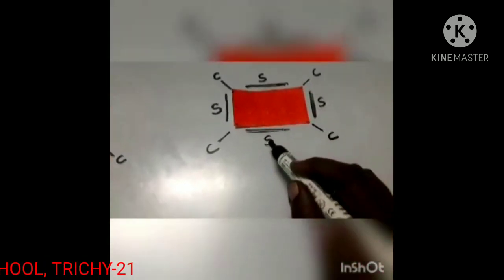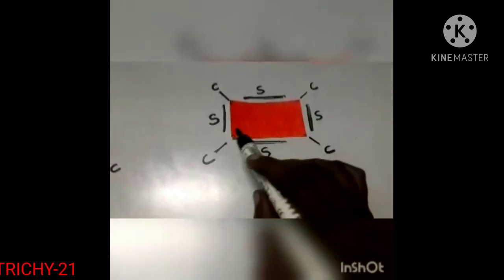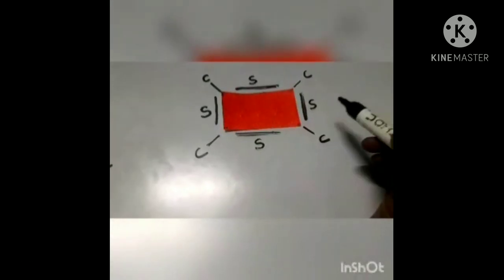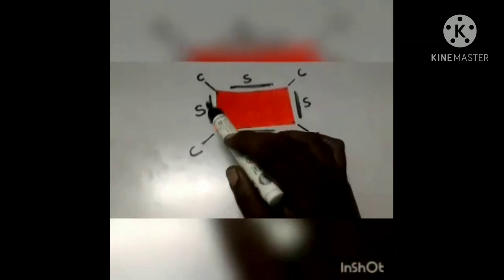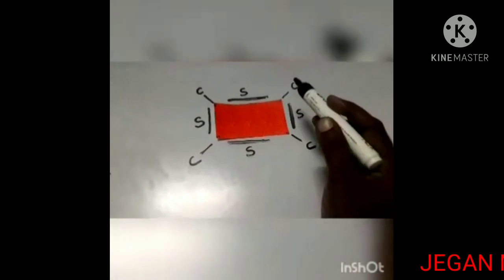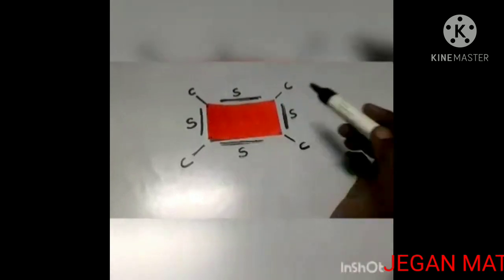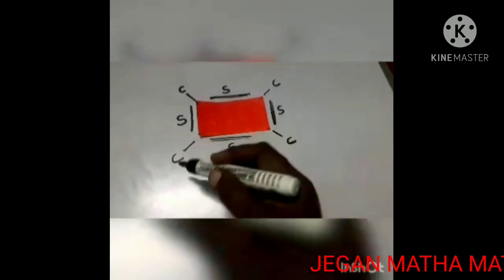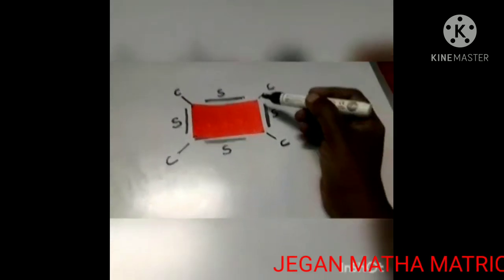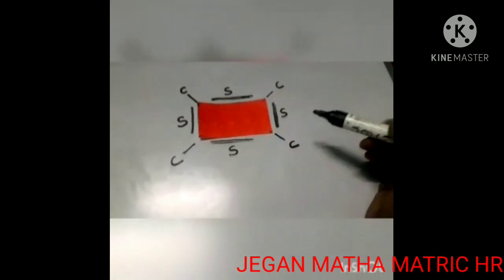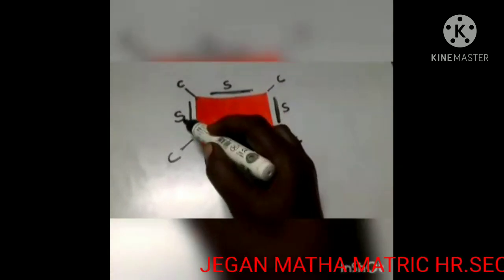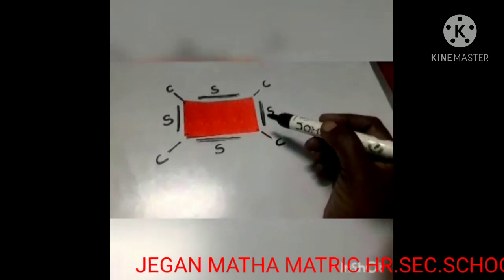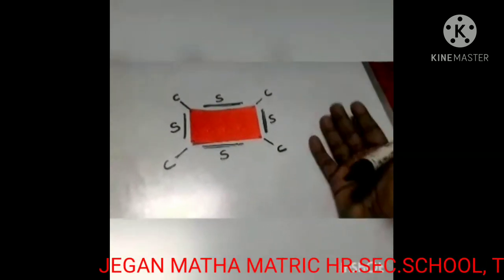Next one is rectangular shape. See, how many sides and corners are there? One, two, three, four — four corners. And one, two, three, four — four sides. Four corners and four sides. C means corners, S means side. So, four sides and four corners in rectangle.